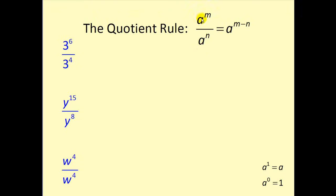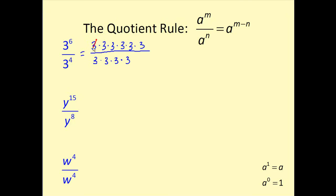The quotient rule states that if we're dividing and the bases are the same, we subtract the exponents. For this first problem, if we have three to the sixth divided by three to the fourth, let's assume we could not remember the quotient rule. We would expand each of these: six factors of three in the numerator and four factors of three in the denominator. Then we simplify — every three over three simplifies to one, and we can see we'd have three to the power of two, or three squared.